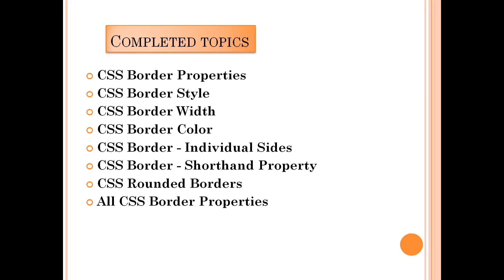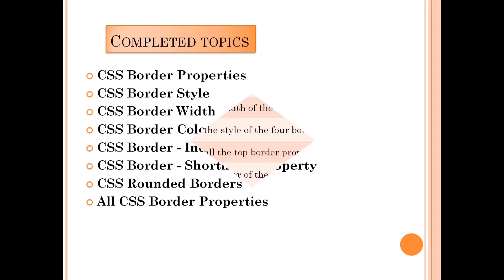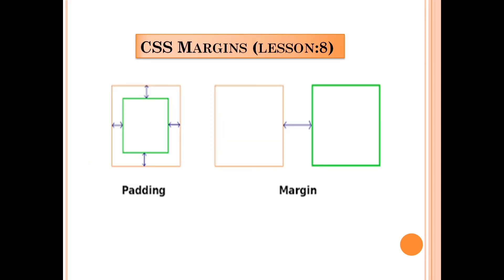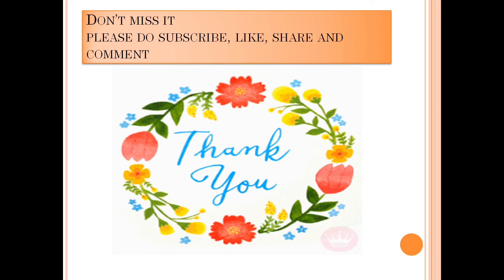The next topic is CSS margin, lesson number 8. It covers padding and margin — these two are different. Padding is the space between two lines, such as between a green and red border. We'll see about margin in tomorrow's class, so don't miss it. Please subscribe, like, share, and comment. Signing off — Tarika De Dipya, bye!